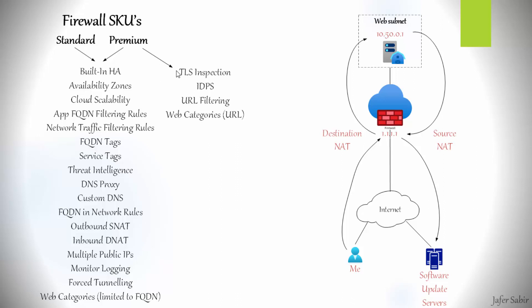Both SKUs have built-in high availability — there is no need to configure a second device as you would with physical hardware. When you create a firewall it builds two instances automatically, and the firewall can be configured to span multiple availability zones for increased availability, assuming the region supports it. Note that availability zones can only be configured during deployment; you cannot change this afterwards. The firewall automatically scales out using virtual machine scale sets (VMSS), scaling up and down based on CPU usage and throughput, supporting up to a maximum of 30 Gbps.